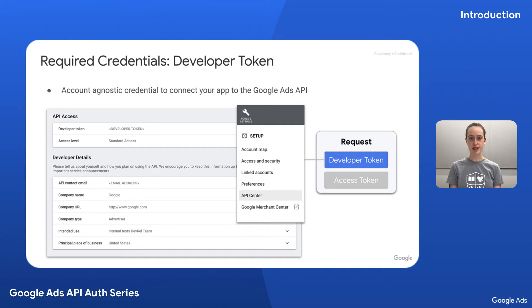For example, there are different limitations when using a basic versus standard access token. In order to create a developer token, head over to the API Center in a Google Ads Manager account and follow the instructions.